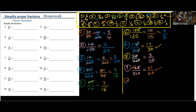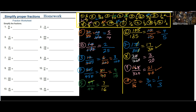Number 10 — we have 12 over 36. 4 into 12 is 3 and 4 into 36 is 9. Then 3 into 3 is 1 and 3 into 9 is 3. So 12 into 12 is 1 and 12 into 36 is 3 — the answer is 1 over 3.